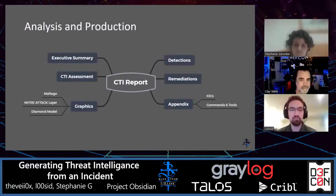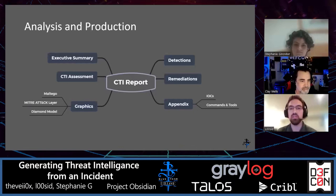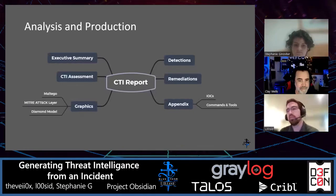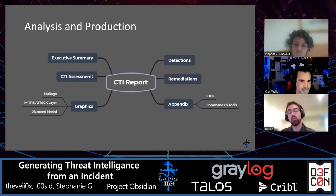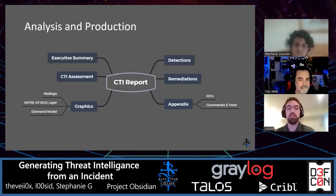This graphic focuses on the production element of the phase and could be used as a template, showing some of the things that go into a report. You're not limited to just these items or these graphics — you could put things like a multi-graph or the diamond model on there. This is a good visualization of all the things that would go on a report. As you're completing it, the question to ask is: does it help tell the story?